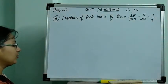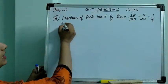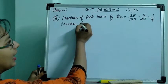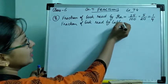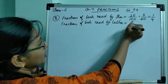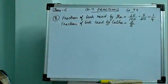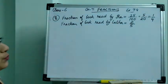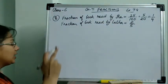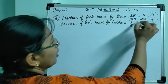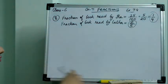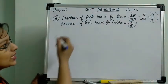Lalitha read 2 by 5 of the same book. Fraction of book read by Lalitha is 2 by 5. The amount read by Ila was not given in fraction form, but we converted it into a fraction by writing total pages in the denominator and pages read in the numerator, then simplifying. The question asks who read less, meaning we need to compare 1 by 4 and 2 by 5.